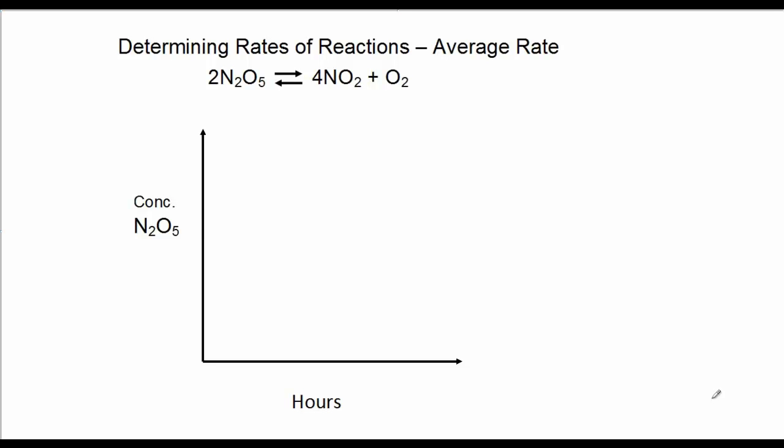In this video I'd like to show you how to determine the average rate of a chemical reaction. I'd like to do that graphically and use the reaction, the decomposition of N2O5 into NO2 and O2.